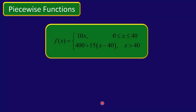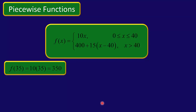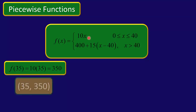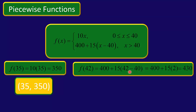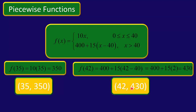So let's see how this works. Let's suppose we work 35 hours. That is definitely between 0 and 40, so we use the rule 10x. We multiply 10 times 35 and get $350. Now let's suppose we work 42 hours. The number of hours is definitely above 40, so we use the rule 400 plus 15 times (42 minus 40), which is 400 plus 15 times 2, and we get $430. That would be our pay if we work 42 hours, giving us the ordered pair (42, 430).